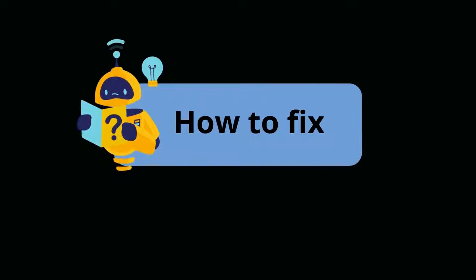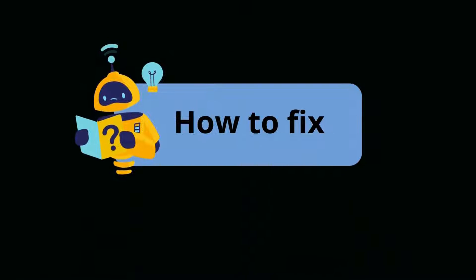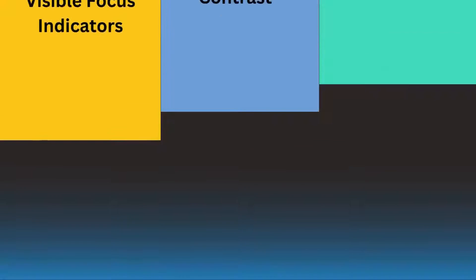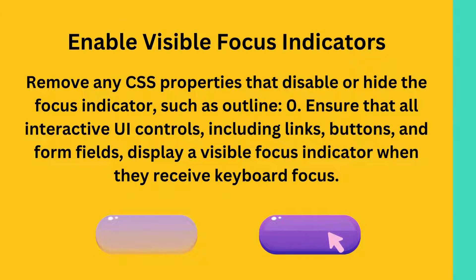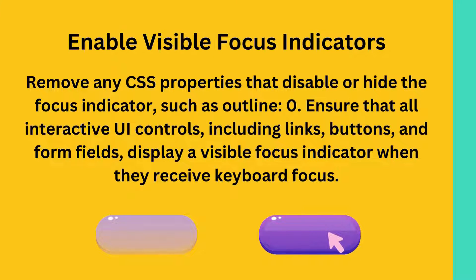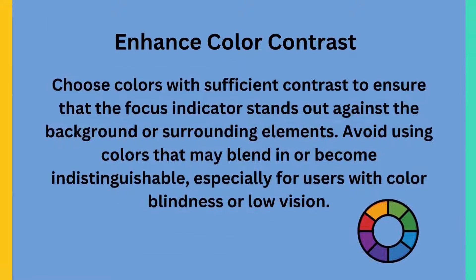To address these issues, here are some steps to fix the problem. One should enable a visible focus indicator — remove any CSS properties that disable or hide the focus indicator, such as outline set to 0. Ensure that all interactive UI controls including links, buttons and form fields display a visible focus indicator when they receive keyboard focus.